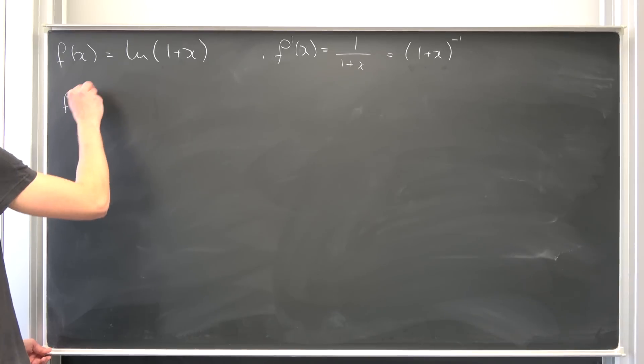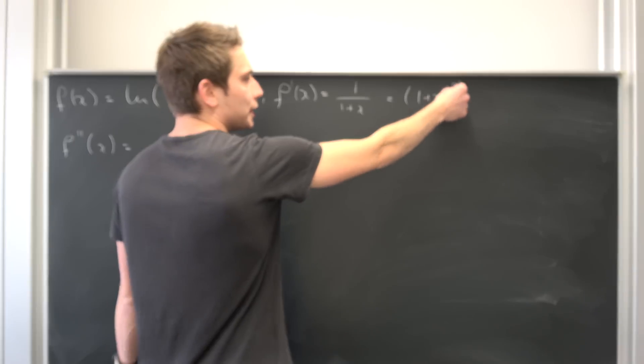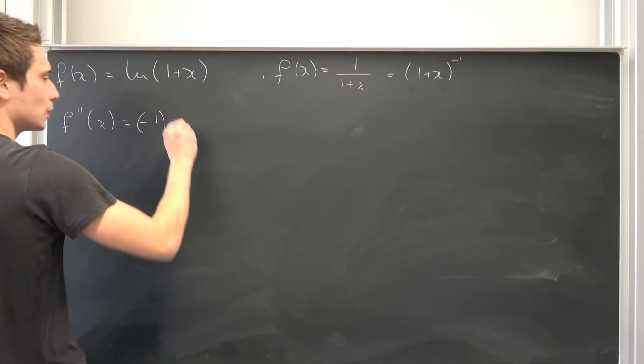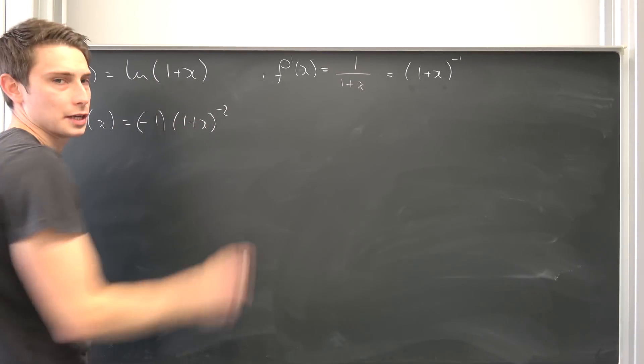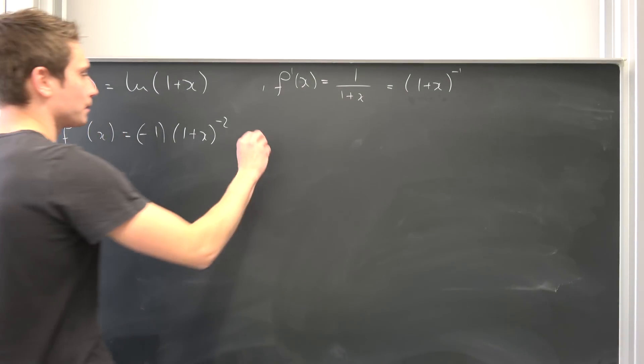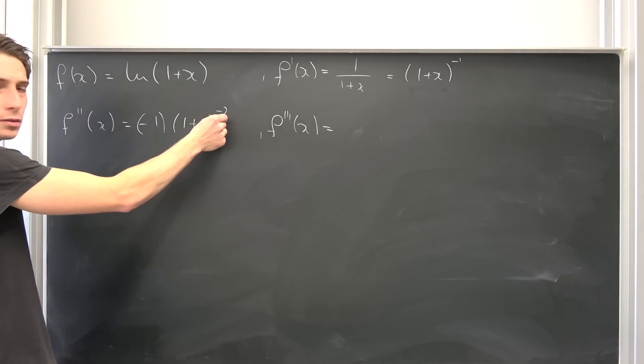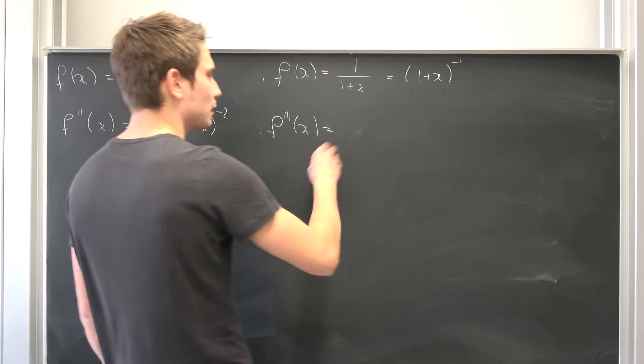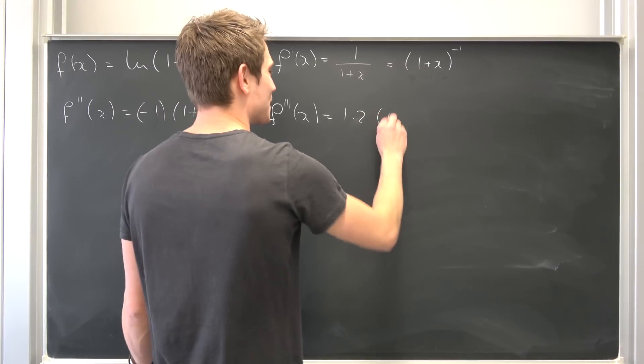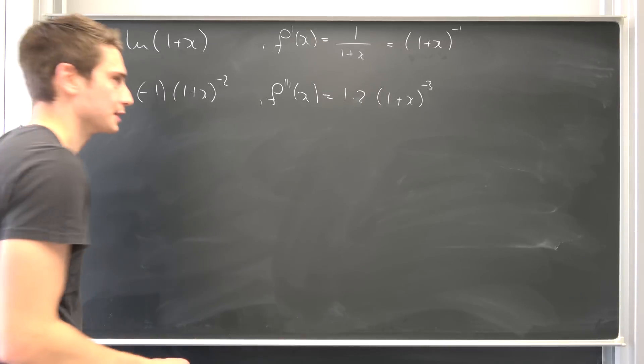Differentiating this a second time, we have to take the outer derivative, dragging the negative 1 to the front and reducing the power by 1. So 1 plus x to the negative squared, and then take the inner derivative, once again it's just 1. Then f triple prime of x, once again dragging the exponent down, negative 1 and negative 1 is going to cancel out. So we are going to get 1 times 2 times 1 plus x to the negative third power.